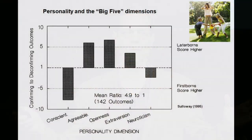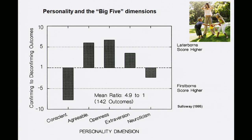If we look at the birth order literature as a whole for the last 40 or 50 years — over 1,000 studies — and sum them up using meta-analysis, we get a very clear picture: firstborns are more conscientious than laterborns; laterborns are somewhat more agreeable, more extroverted in the sense of being sociable, more open to experience in the sense of being unconventional and sometimes rebellious; and there are very minimal differences on neuroticism.